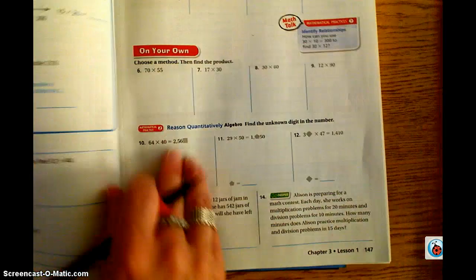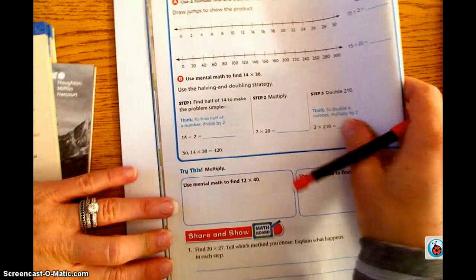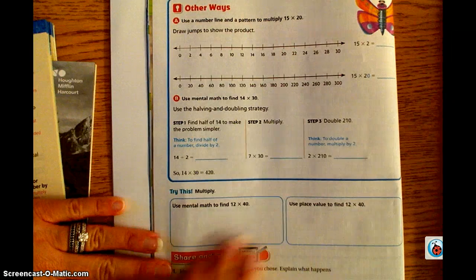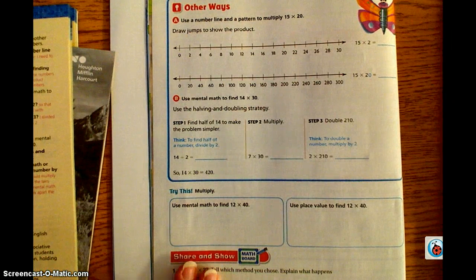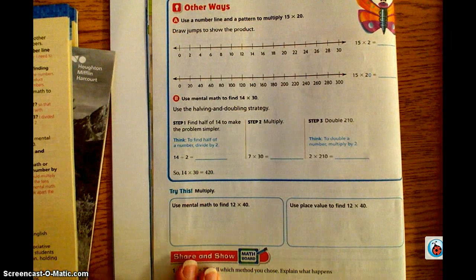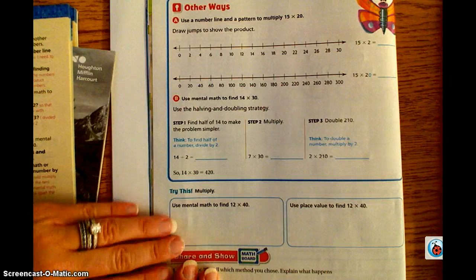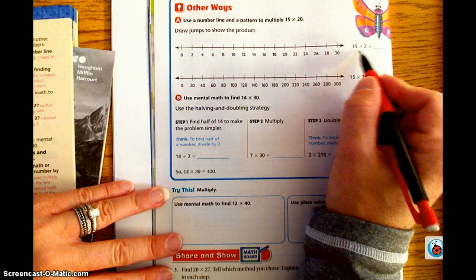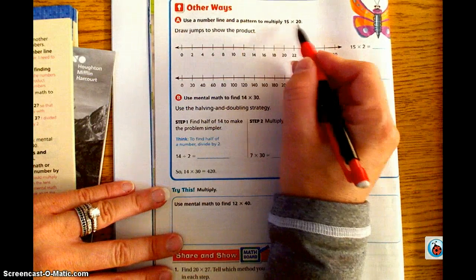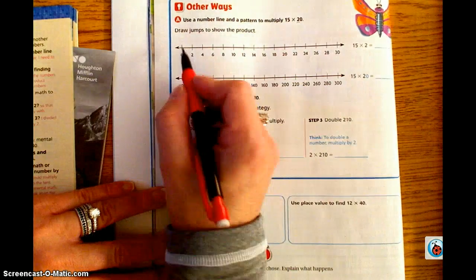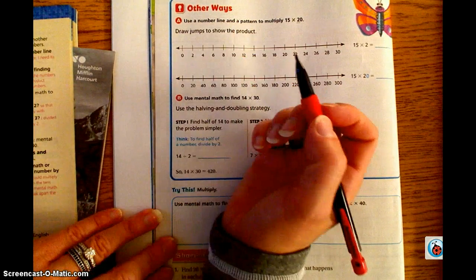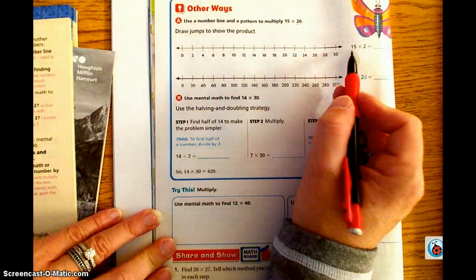We're going to turn to page 146. On page 146, we have other ways that we can use to multiply tens. The first way is to use a number line. This number line represents 15 times 2. Essentially, all we're going to do is we're going to skip count by twos until we get to 15.